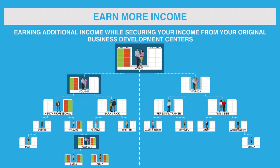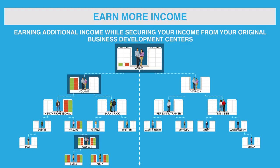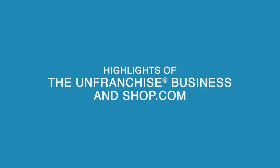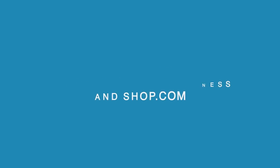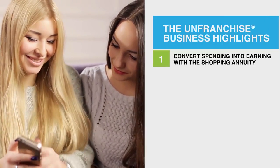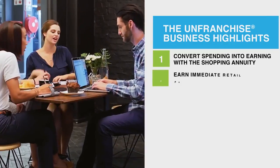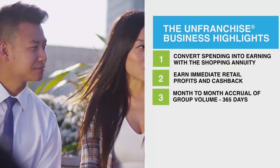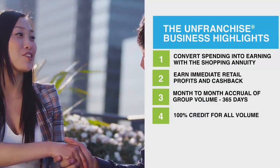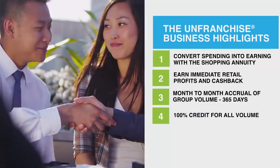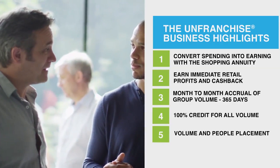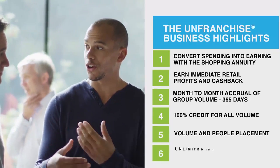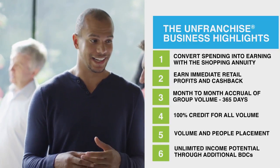Furthermore, BV and IBV is being credited to qualified unfranchised owners on your team between your additional business development centers and your original business development centers. Let's review some highlights of the unfranchised business and Shop.com: the ability to convert your spending into earning with the shopping annuity; earn immediate cash back and retail profits; month-to-month accrual of group volume for 365 days; 100% credit for all volume generated within your organization; the ability to place people and volume within your organization; and unlimited income potential with additional business development centers.